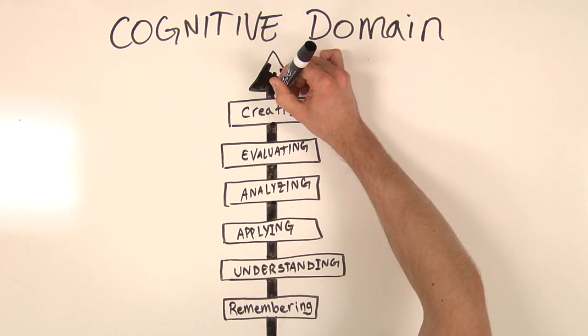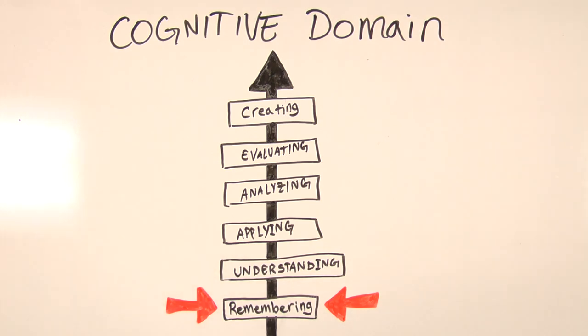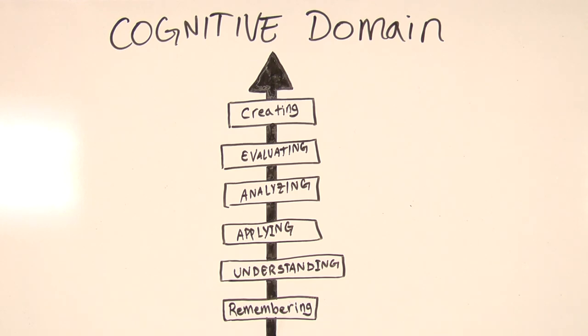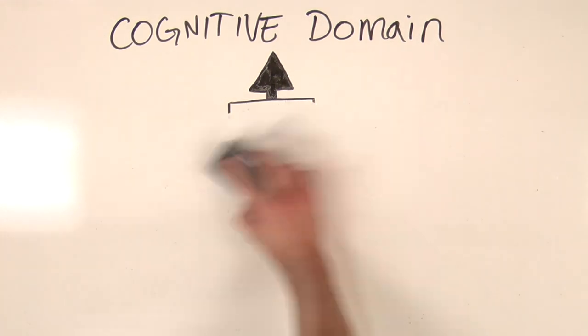For example, a student of literature might first memorize facts about Hamlet. Later, that student would write essays analyzing the theme of revenge or some other crap. At the highest level, the student would draw from lower level skills to create original works of literature, preferably superior to those god-awful Twilight books. Sparkly vampires? Seriously?